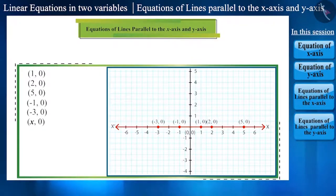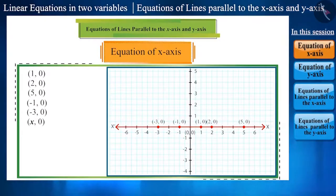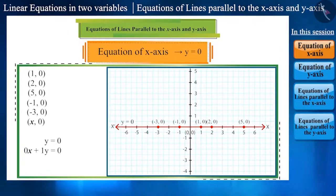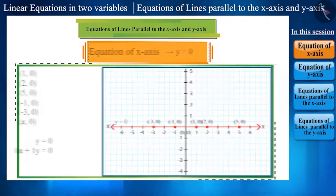Can you tell the equation of this line or what will be the equation of x-axis? Let's find out. We know that y-coordinate of all the points lying on the x-axis will be 0. That means, x-axis is the line where y = 0. And this itself is the equation of the x-axis. We can even write it this way: 0x + 1y = 0.